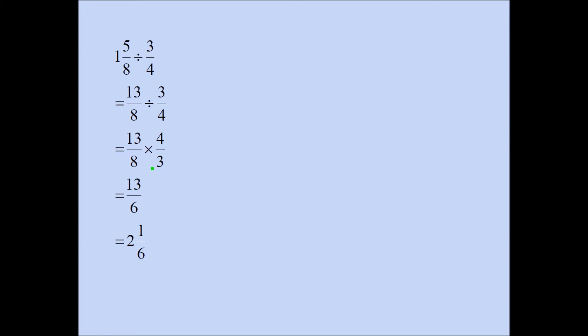And when you multiply, 4 goes into 8 twice and 2 times 3 is 6. That's why your final answer is 13 sixths, which turns out to be 2 and 1 sixth, which is exactly what we found visually. Think carefully. Think well.